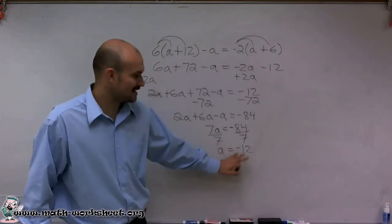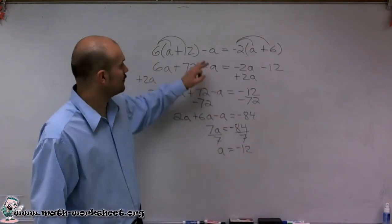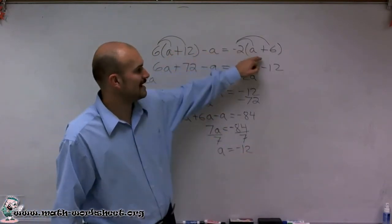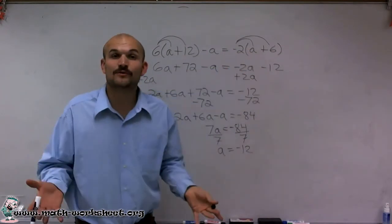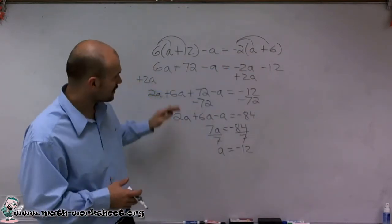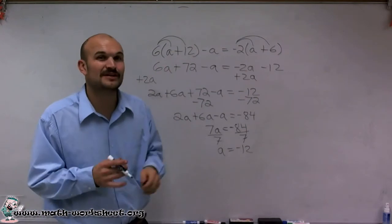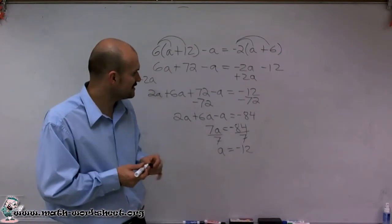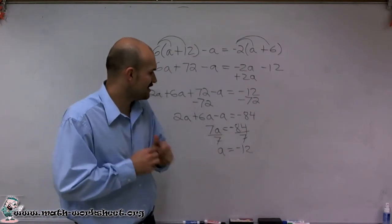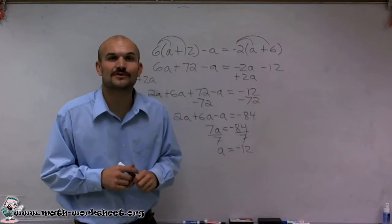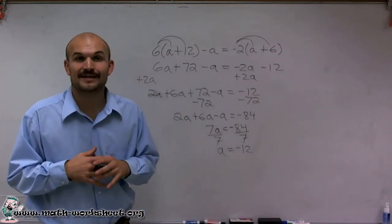Now to check my answer, I could always plug in negative 12 back into my value of a into this top equation and see if my equation is still going to equal each other. But looking at my operations, and to keep this video kind of short, I can see that it looks like my work is correct. And therefore, I'll go with the solution of this equation is a equals negative 12. Thanks.